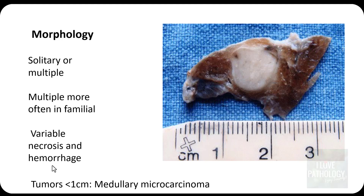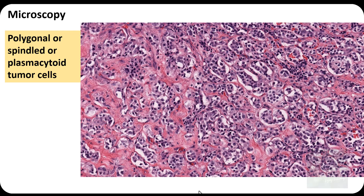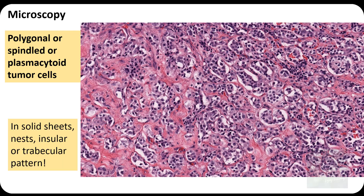Microscopically, the cells of medullary thyroid carcinoma are polygonal — the normal parafollicular cells are polygonal and slightly larger than follicular epithelial cells. The tumor cells can be polygonal, spindled, or plasmacytoid in shape. They can be arranged in solid sheets, nests, insular pattern, or even trabecular pattern.